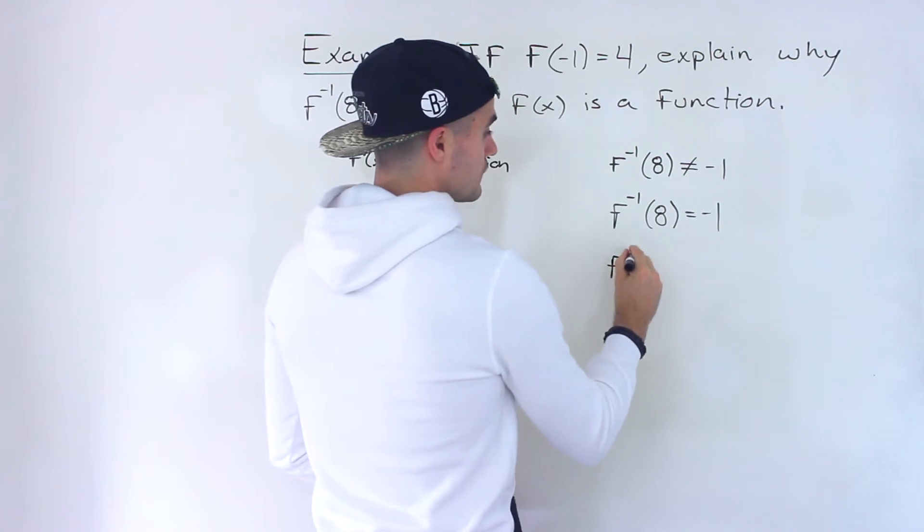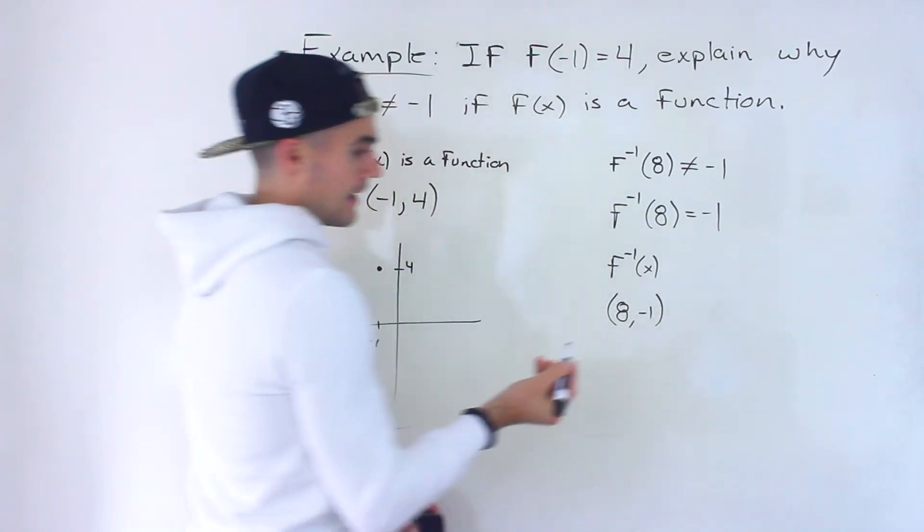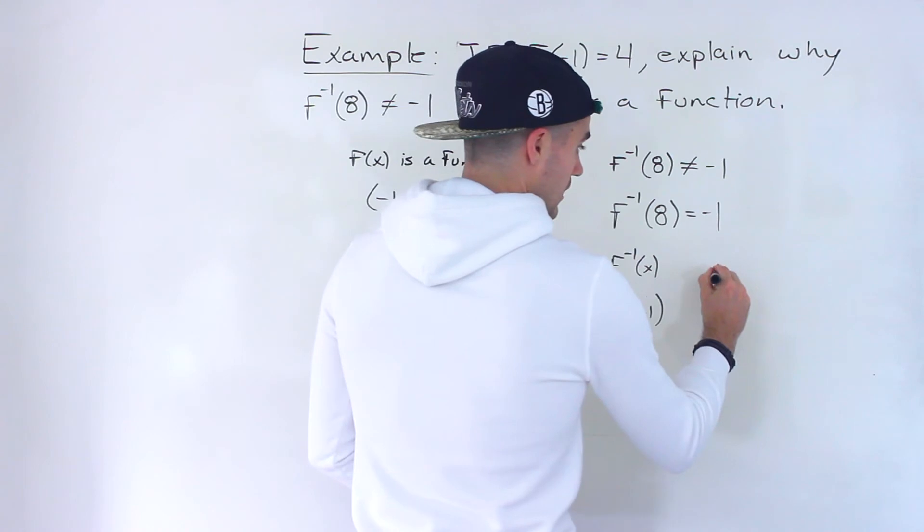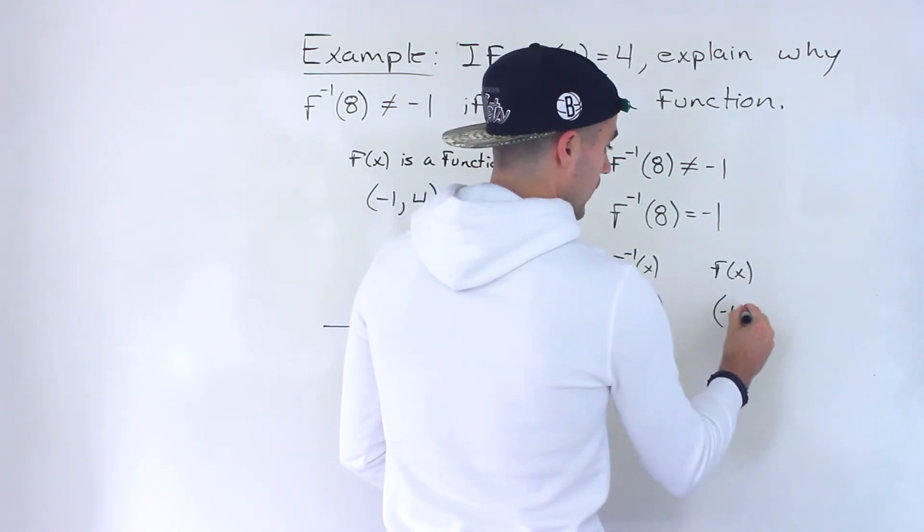It means that the inverse function has a coordinate 8 and negative 1, which means that the function f of x would have a coordinate of negative 1 and 8.